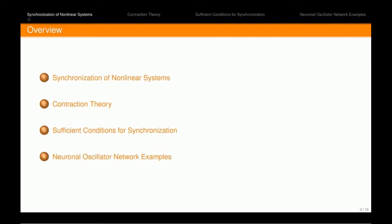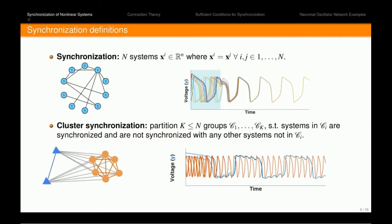So I'd like to start with some definitions. To begin, we consider for the course of this talk synchronization in the exact sense. That is, if you have a group of systems, their dynamics will be identical after a certain transient time. We would also like to define cluster synchronization, which is where you can partition a graph into k groups such that systems in one group are synchronized with one another, but they're not synchronized with any other group systems that are not in that group.